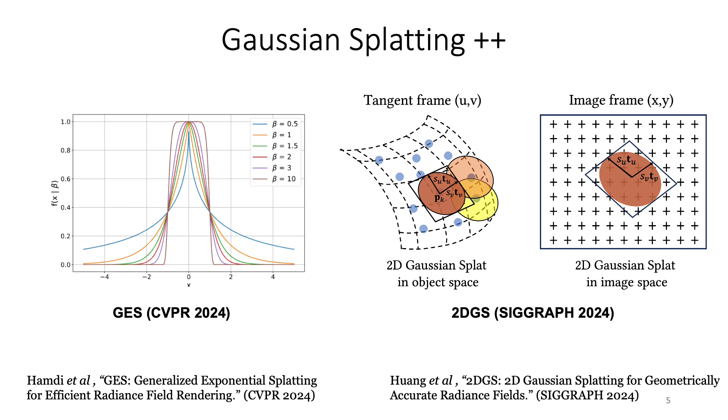Several follow-ups came over the last year. For example, 2D Gaussian Splatting made the Gaussians flat to make them more surface aligned and more geometrically accurate. AGS paper from last CVPR proposed a generalized exponential formulation where it extended the Gaussians to more general form with extra parameter beta.